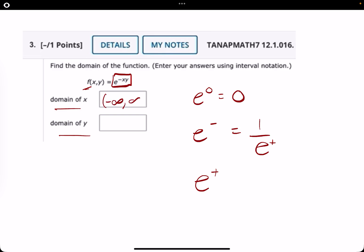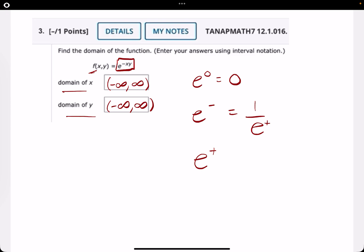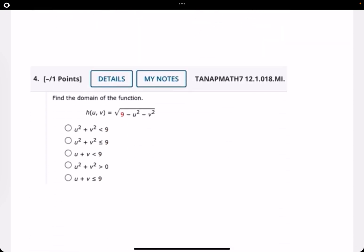And so, I would say the domain for x and y values is just negative infinity to infinity. You can have any x and y values up in that exponent. Now, that's not the case, say, with something like this.